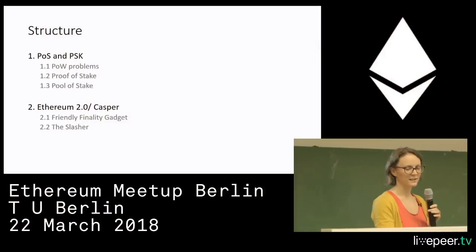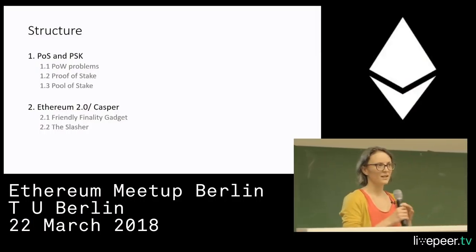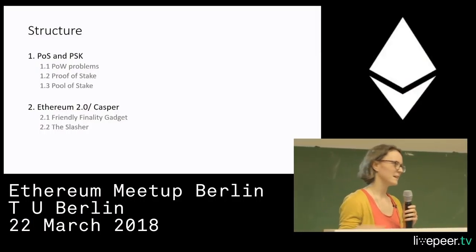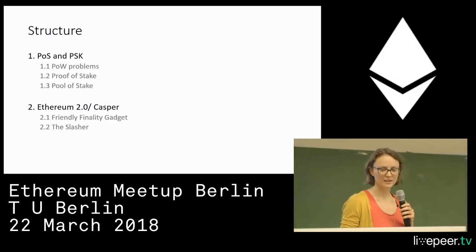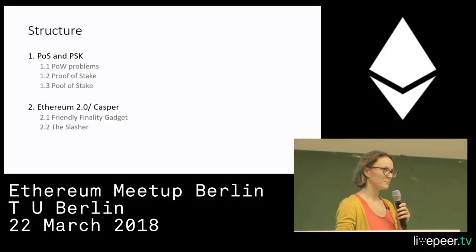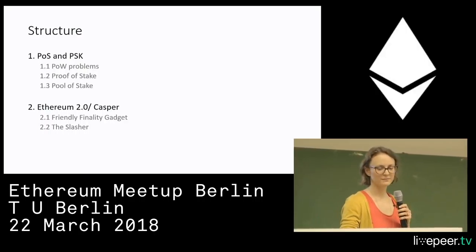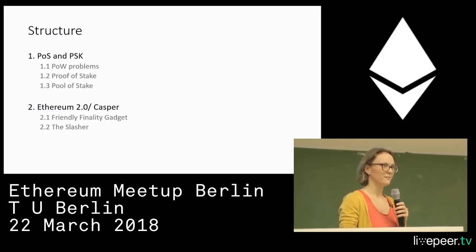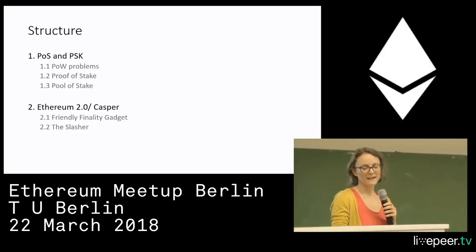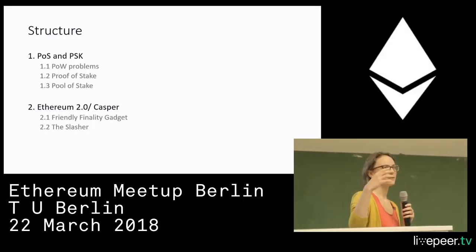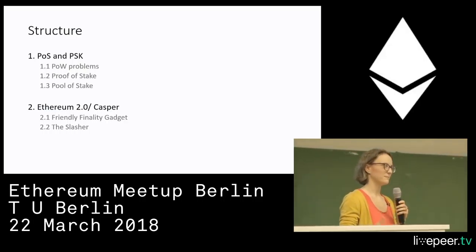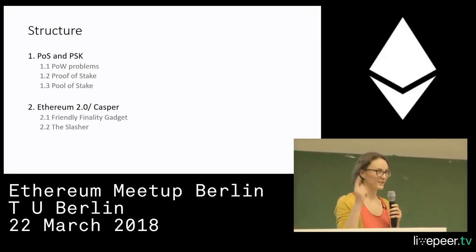Before we start, I'll explain the structure. First, I'm going to give an overview about POS and PSK, the company I'm working for, the major problems that POW poses, the solutions that Proof of Stake gives, Pool of Stake, and then we're going to dive a little bit further into Ethereum Casper, and I'll explain FFG — and you're going to understand it.